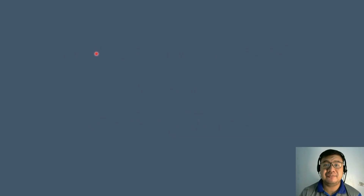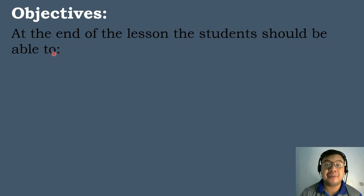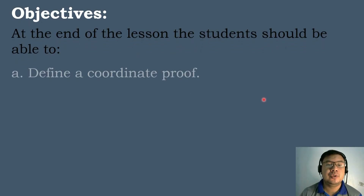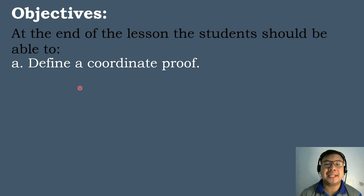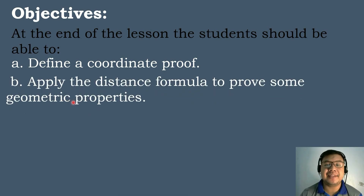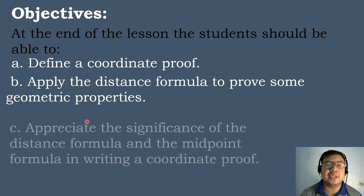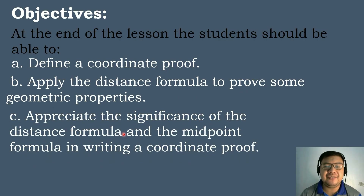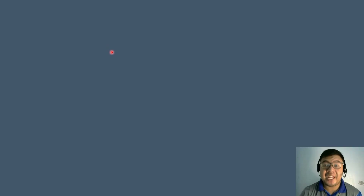So let's have the following objectives in today's topic. At the end of the lesson, the students should be able to: Letter A, determine a coordinate proof; Letter B, apply the distance formula to prove some geometric properties; Letter C, appreciate the significance of the distance formula and the midpoint formula in writing a coordinate proof.